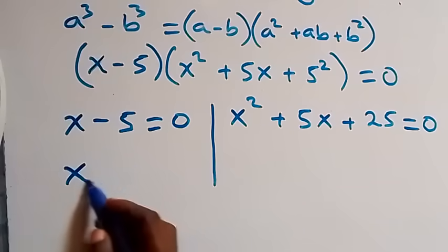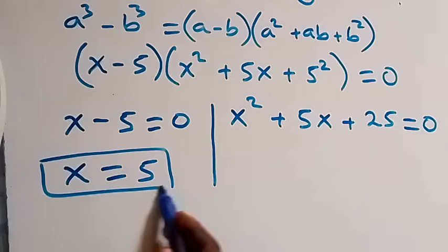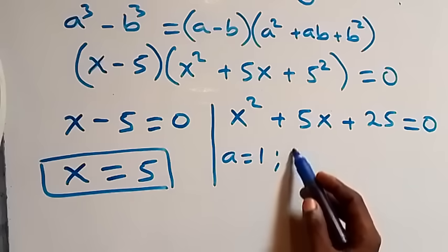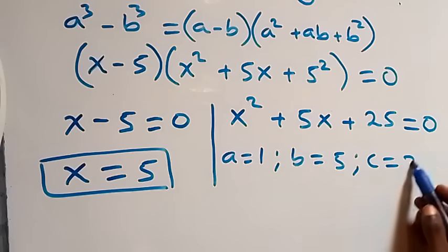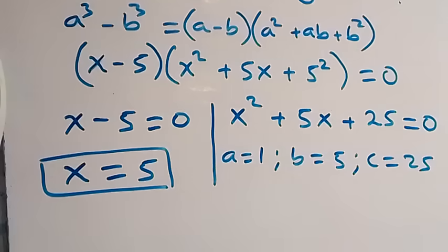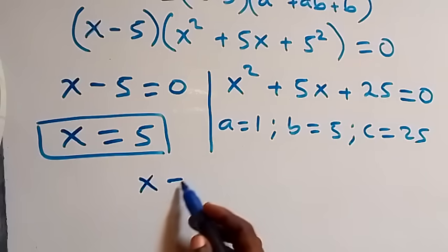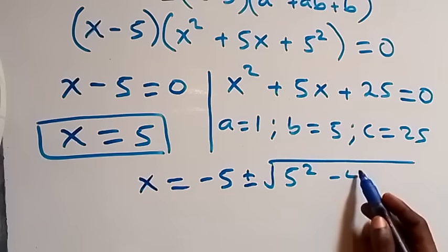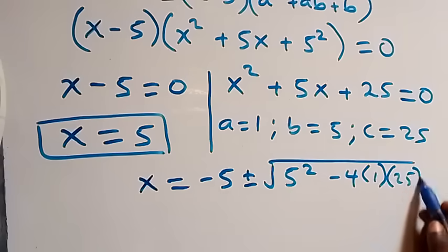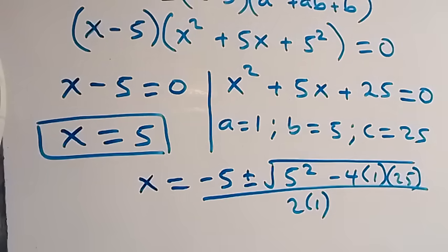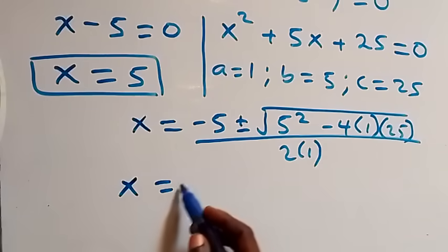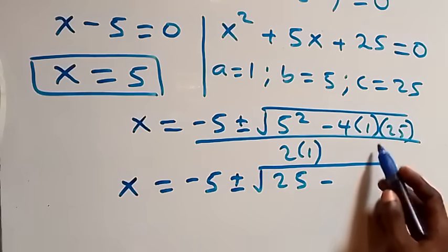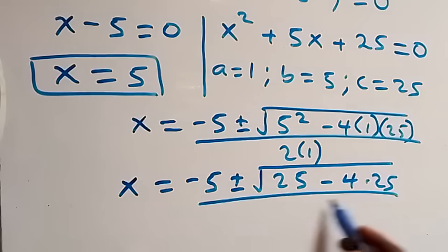From the first factor, x = 5, which is also a real solution. For the quadratic x² + 5x + 25 = 0, we have a = 1, b = 5, c = 25. Applying the quadratic formula: x = (−5 ± √(5² − 4·1·25)) / 2 = (−5 ± √(25 − 100)) / 2.